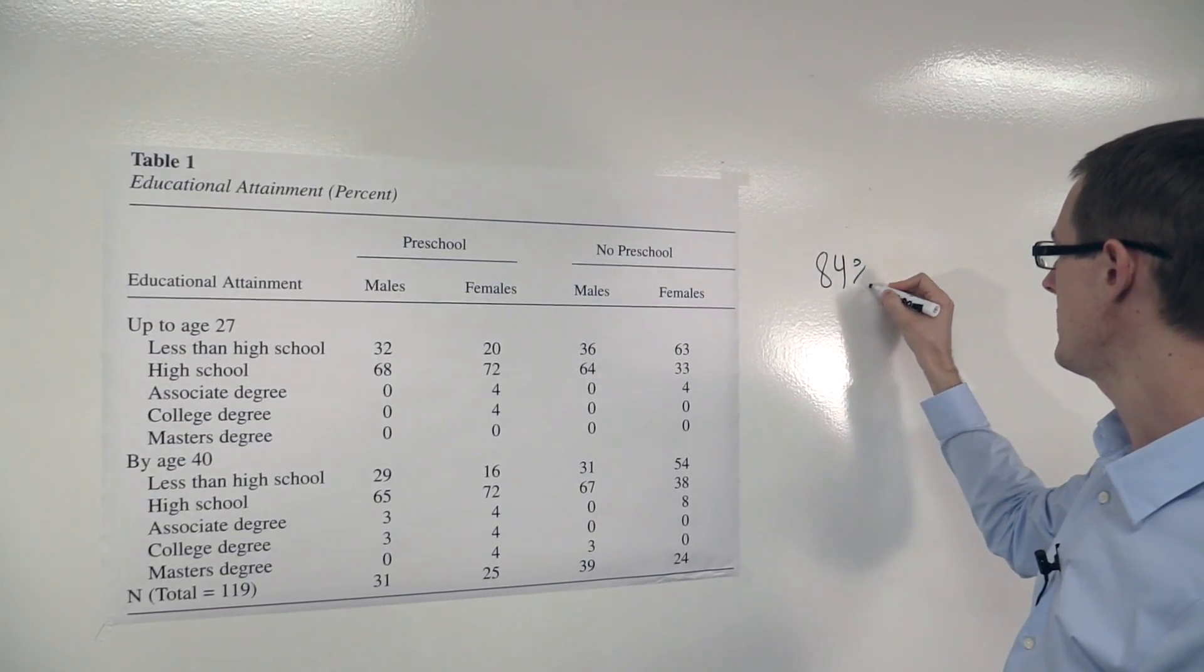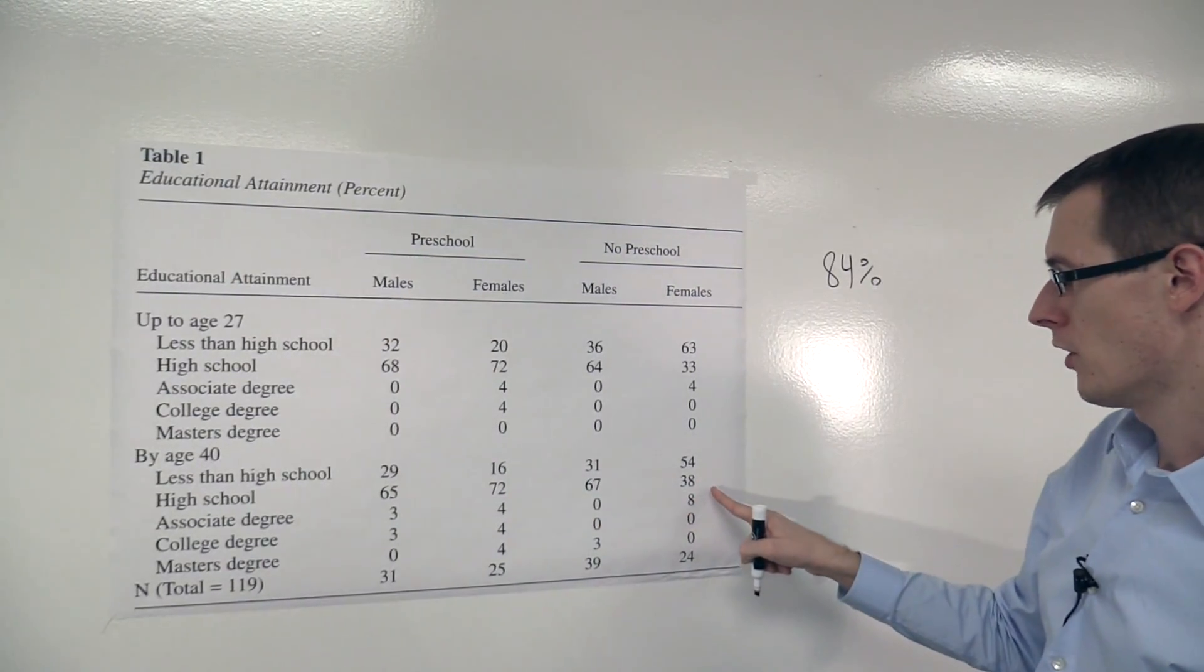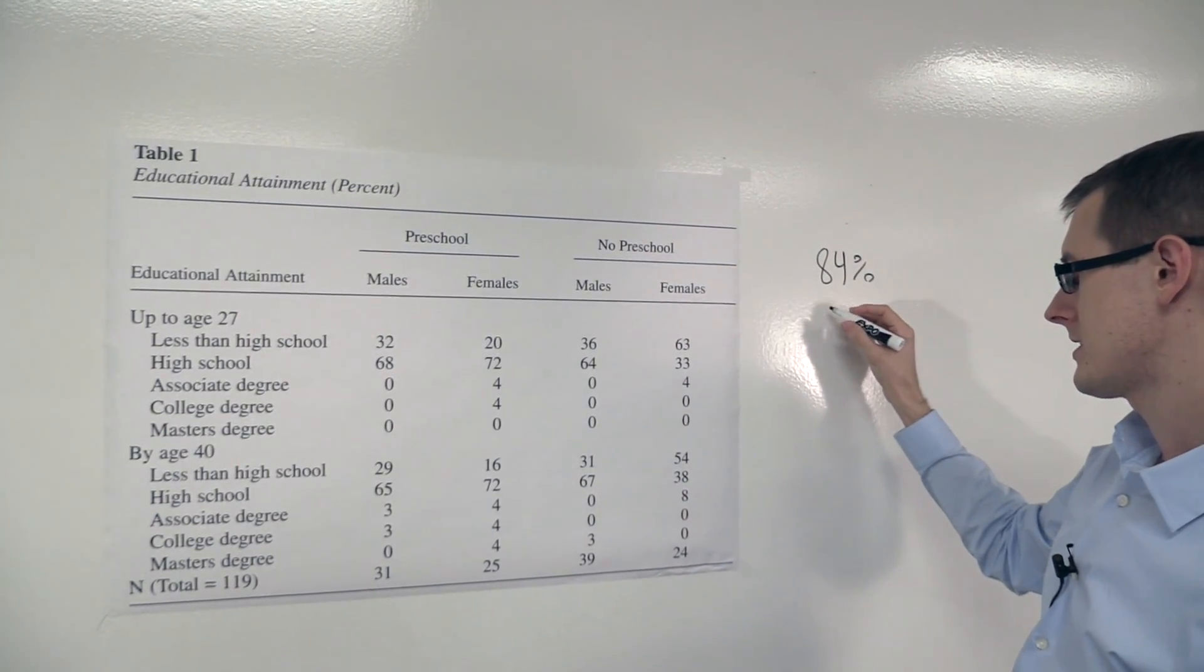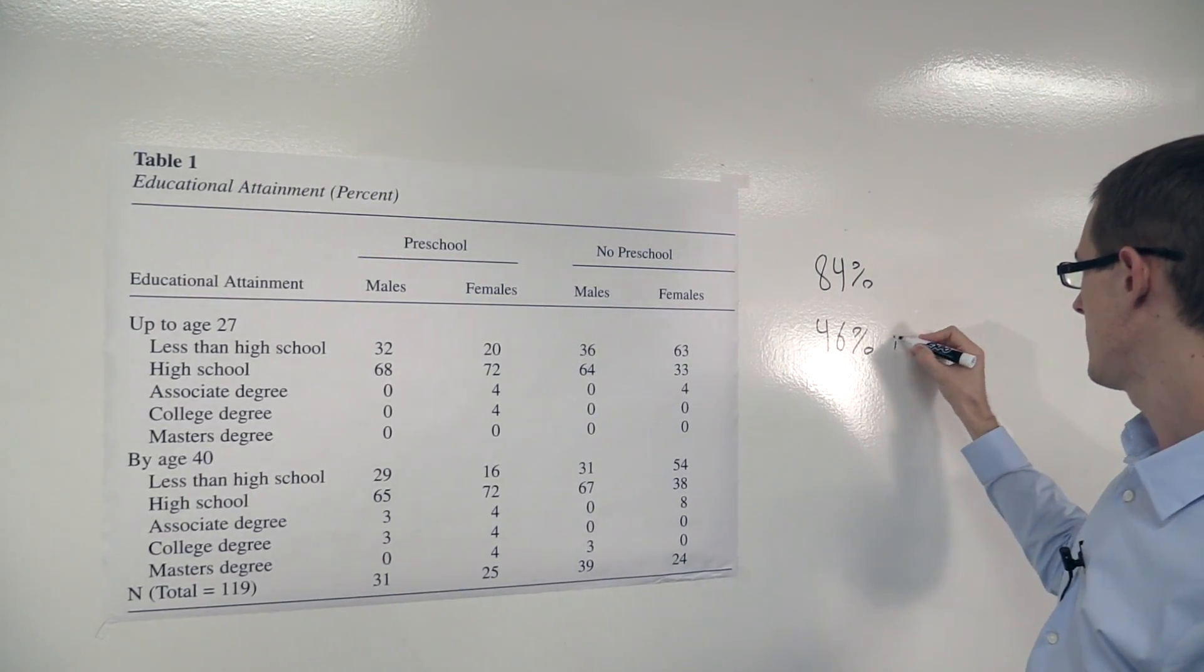Over here it's 38 plus 8, so that's 46, versus 46 in control.